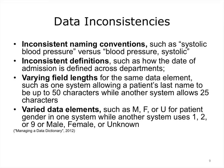The Health Information Management Association, AHIMA, identifies several types of inconsistencies and quality issues that can occur when data are captured and stored. These include inconsistent naming conventions, such as systolic blood pressure versus blood pressure systolic; inconsistent definitions, such as how the date of admission is defined across departments; varying field lengths for the same data element, such as one system allowing 50 characters for a patient's name while another allows 25; and varied data elements, such as male, female, or U for patient gender in one system, while another uses 1, 2, or 9, or male, female, or unknown. AHIMA further states that inconsistencies in data definitions can lead to inaccurate data use and health data reporting, and can potentially affect the quality of care.